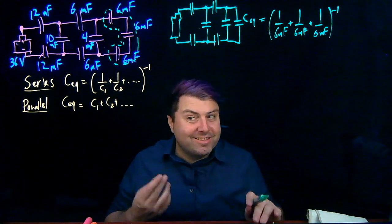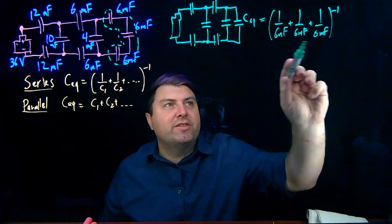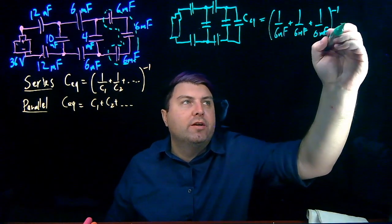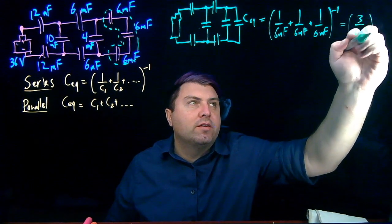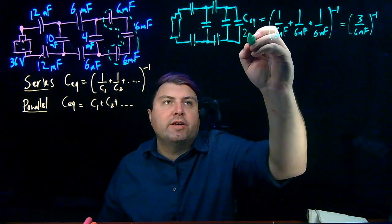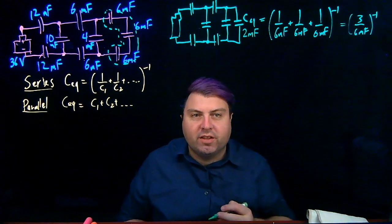We all have a nice common denominator of 6, so 1 plus 1 plus 1 is 3. So we would get 3 over 6 millifarads to the negative 1, or we can write this as 2 millifarads.